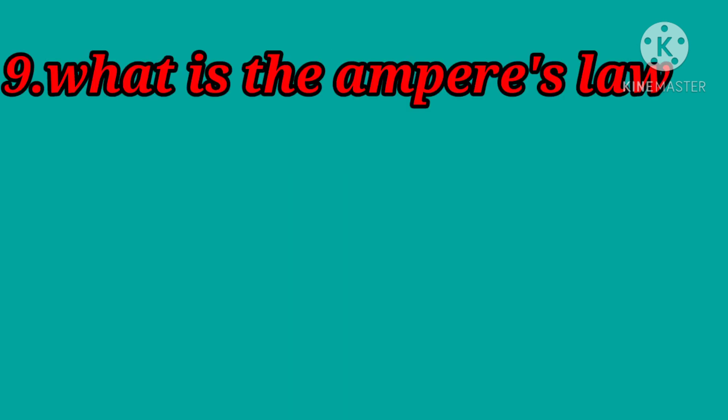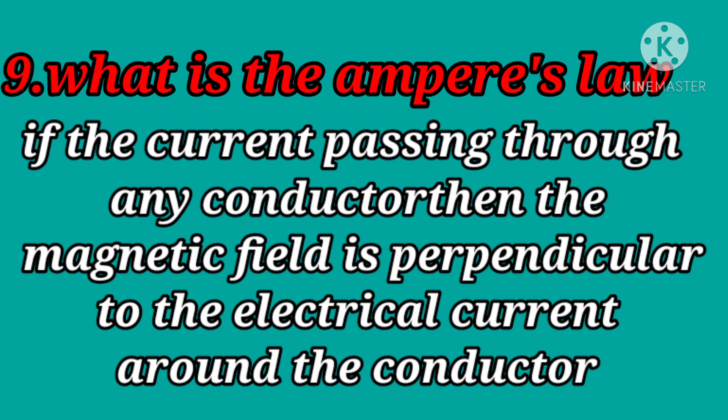What is Ampere's law? If electrical current is passing through any conductor, then a magnetic field is produced in the perpendicular direction to the electrical current, around the conductor in a circular direction.